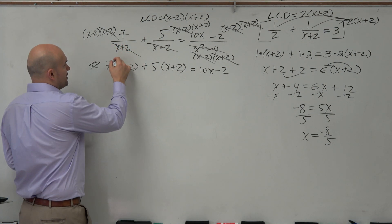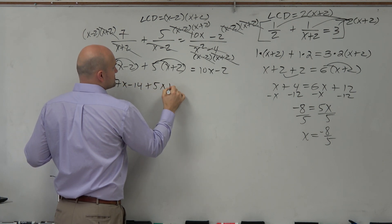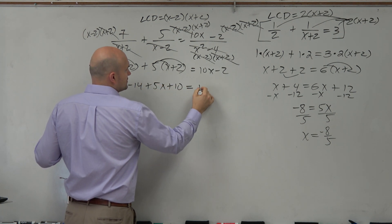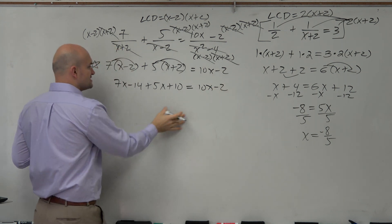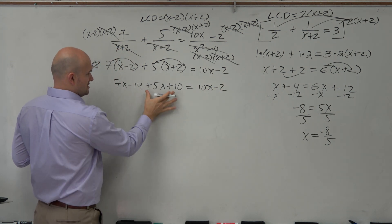So, let's go ahead and apply distributed property, 7x minus 14 plus 5x plus 10 equals 10x minus 2. Let's get the x's to the same side. Well, let's just get this. That's going to be 12x minus 4.